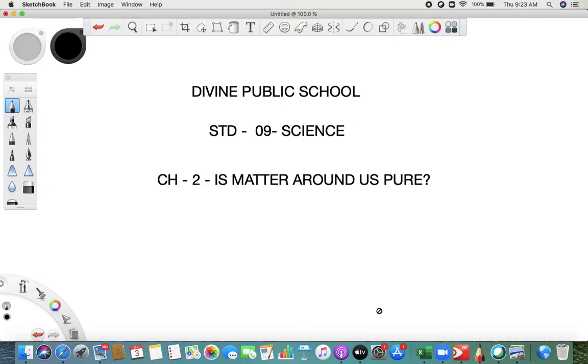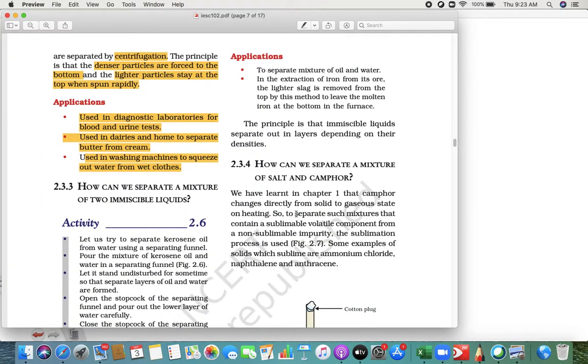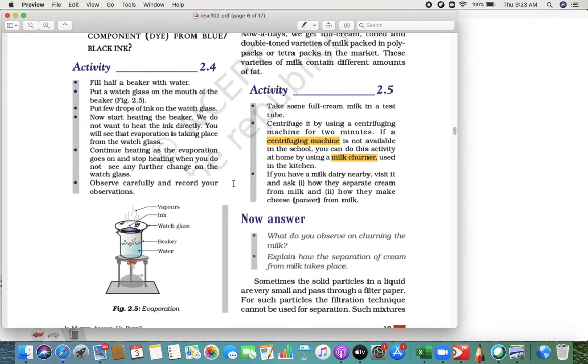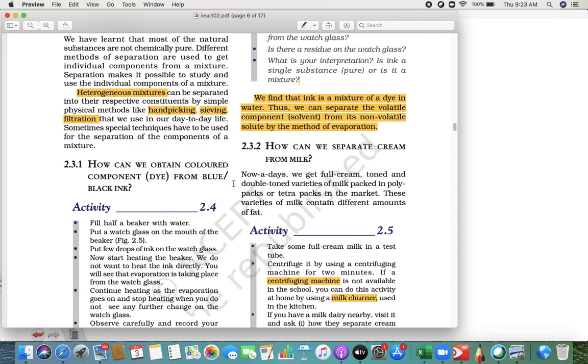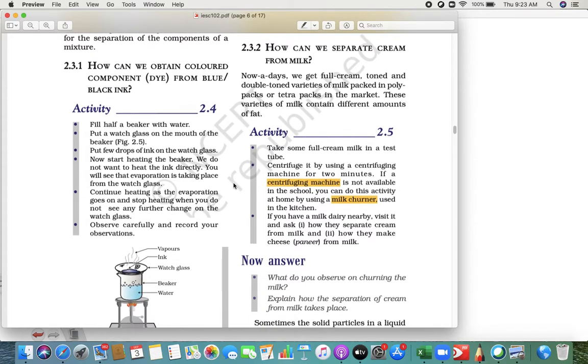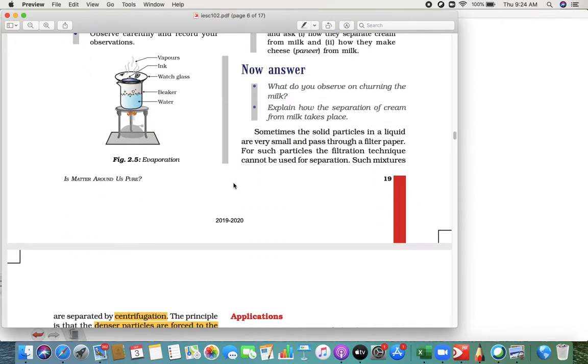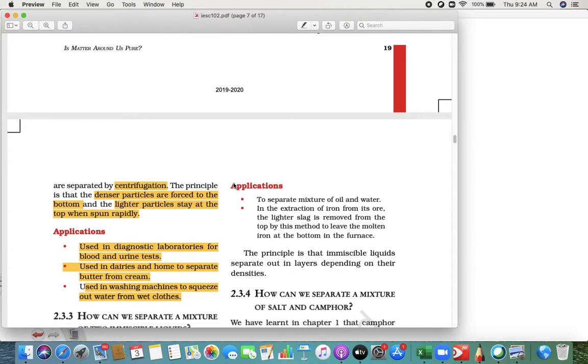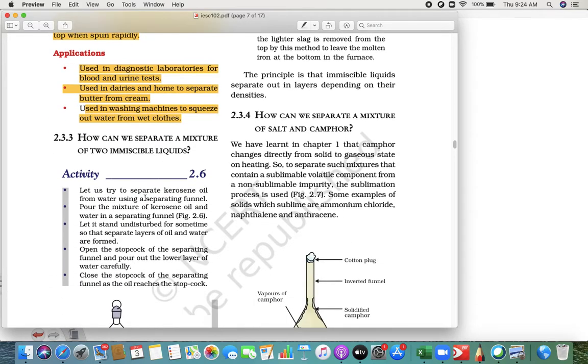I'm your science teacher. We are learning chapter two: Is Matter Around Us Pure. Yesterday we saw two techniques - how to separate a dye from blue or black ink, or how can we separate cream from milk. The first process is called evaporation, the second process is called centrifugation. Now let's see what is next. How can we separate a mixture of two miscible liquids?